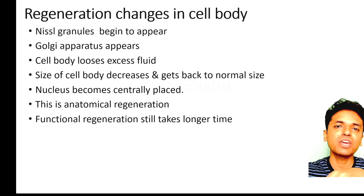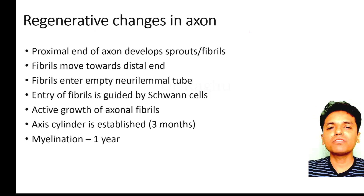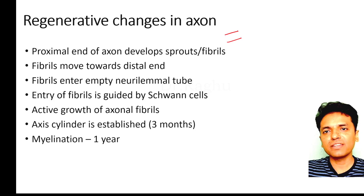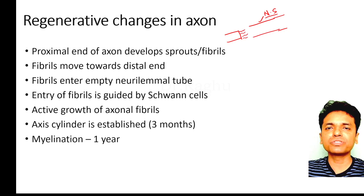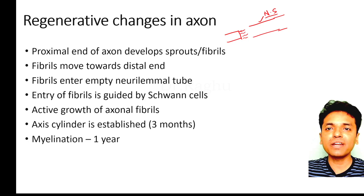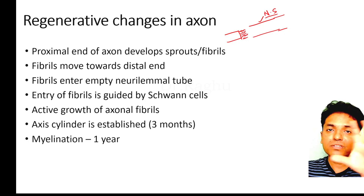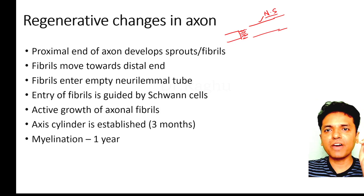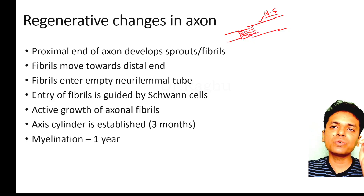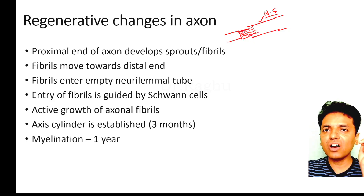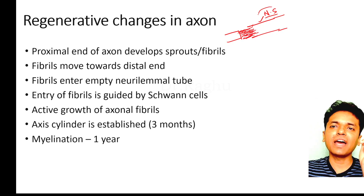Regarding regenerative changes in the axon: consider a cut axon with a proximal end and a distal end containing an empty neurilemmal tube. The proximal end of the axon begins developing sprouts — similar to how a seed develops sprouts with water. These sprouts or fibrils begin to move toward the distal end and enter the empty neurilemmal tube. This entry of fibrils into the neurilemmal tube is guided by the Schwann cells.